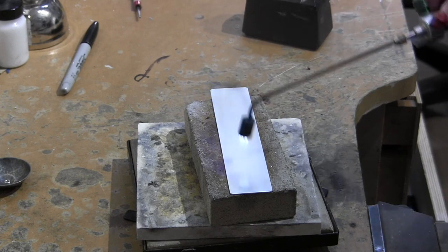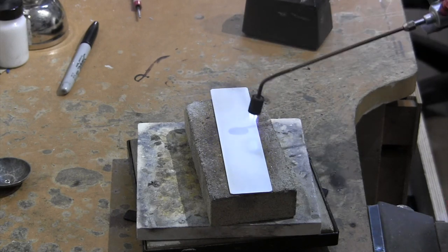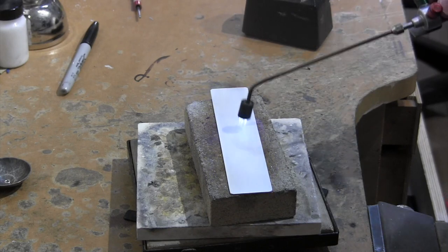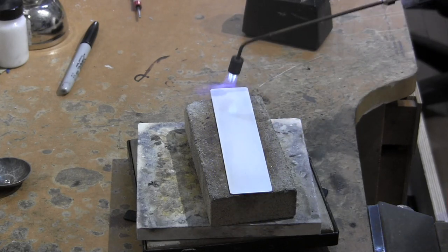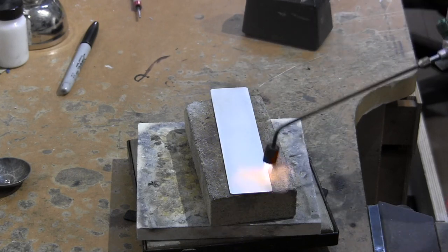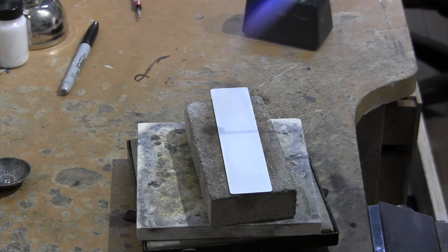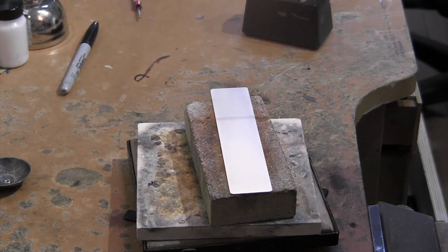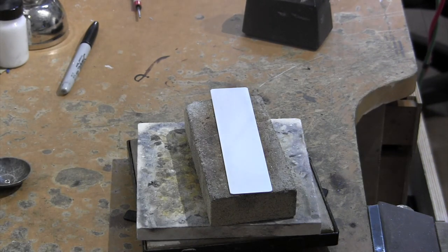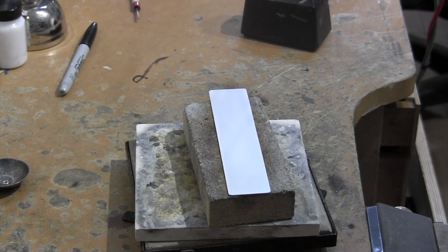That's when you know you're basically getting done. Once you start seeing this, do another two or three cycles and you should be good to go. So I'm going to do another two or three of these cycles, and then I'm going to bring it back and we're going to have the fun of reticulating this silver.